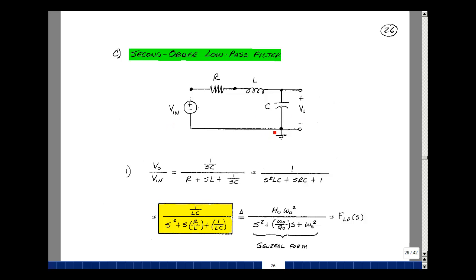Vout is just a voltage divider with the impedance 1 over SC divided by R plus SL plus 1 over SC times Vin is Vout. So Vout over Vin then is just the ratio of the impedance of the capacitor over the sum of the impedances.